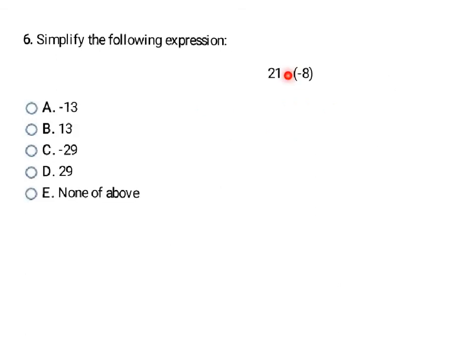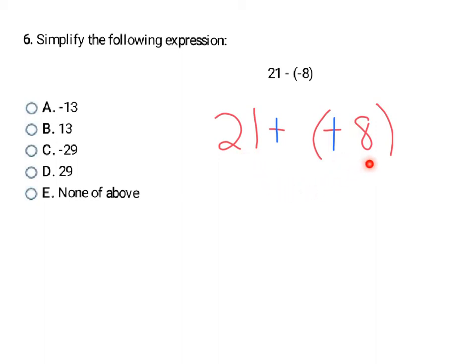Here's another subtraction problem. I'm going to rewrite the whole problem and do stay, change, change. The first number stays the same. The subtraction changes to addition. And the sign of the second number changes — it was negative, so it changes to positive. Now I have positive 21 being added to positive 8 — two positive numbers with the same sign. So I add: 21 plus 8 is 29, and the same sign means my answer is also positive. That makes my final answer D.